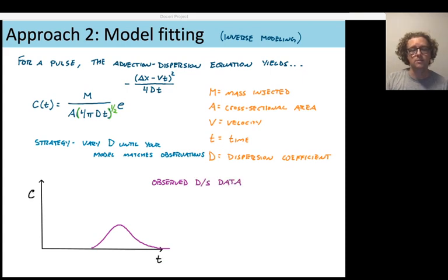So this process might look something like this. Plotting my observed data at the downstream end, in purple, and then using Excel or R, Python, my favorite programming languages, to solve this equation for a concentration time series at a distance of delta x away. If what I get back is this orange curve, that's too spread out. And so I know that my dispersion coefficient was too high. I should guess a smaller number.